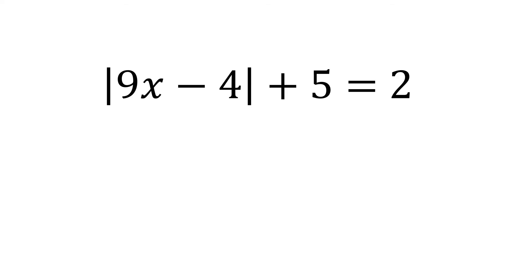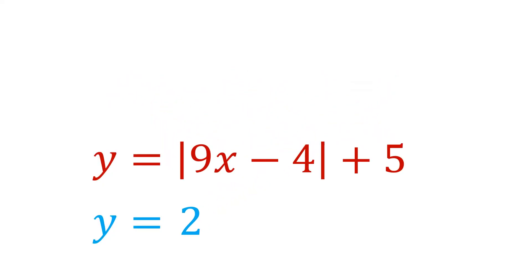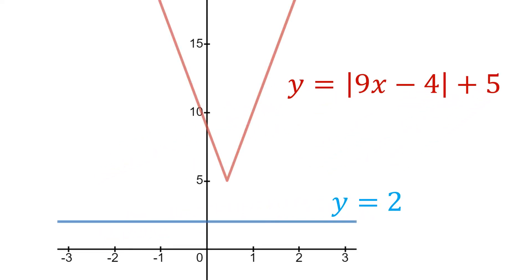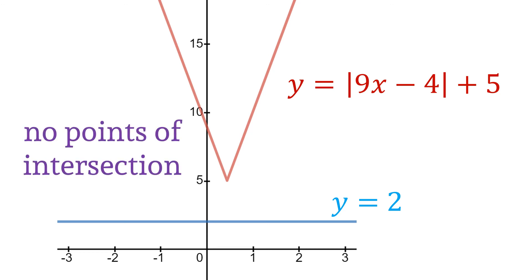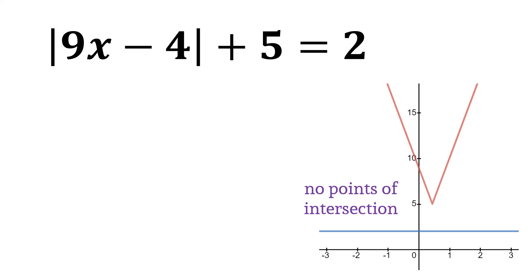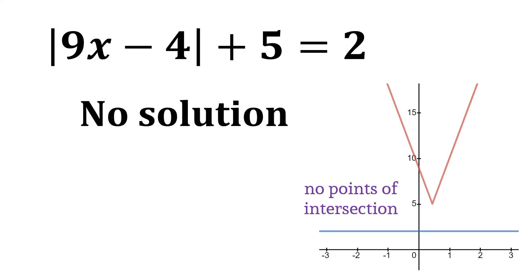Here's our third and final example. We have the absolute value of 9x minus 4, plus 5, and we're saying that equals 2. Once again, we're going to take each side of the equation and set y equal to it — one in red and one in blue. But when we graph them, an interesting situation arises: where are the points of intersection? Actually, these two graphs don't ever intersect. So since they have no points of intersection, going back to the original equation, what we can say is there is no solution.